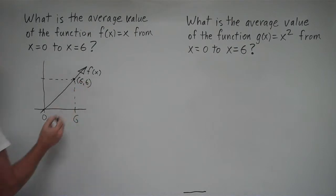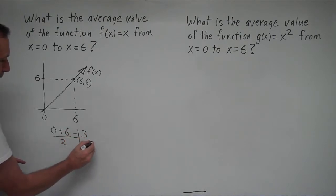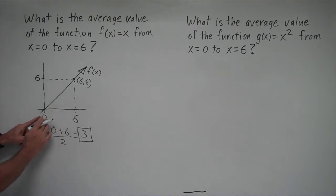We have an output value also of 6. That's just y equals x. And for an average value, we take the two output values, 0 for an output here, plus 6 for an output here, over 2. And we're left with 6 over 2 equals 3. So 3 is the average value of this function from 0 to 6.